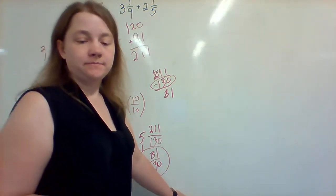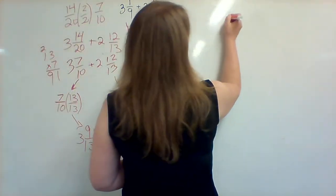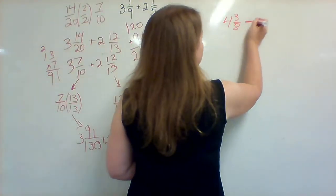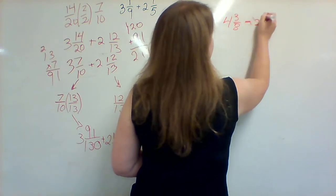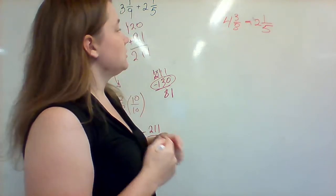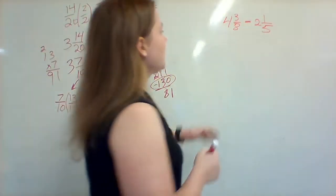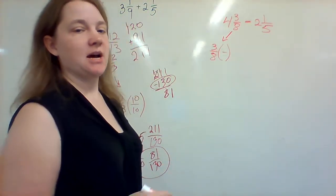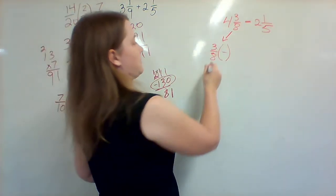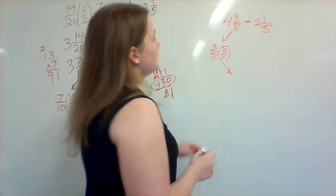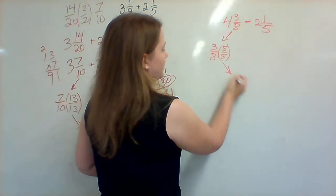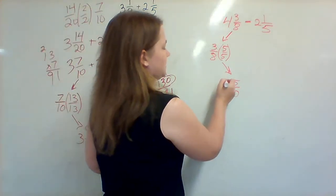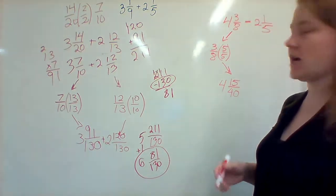We're going to take a look at one more, and this one is 4 and 3 eighths minus 2 and 1 fifth. So what I'm going to do is neaten this up so it doesn't look so sloppy. I'm going to take out my 3 eighths and multiply it by the denominator on the other fraction, so I'm going to multiply it by 5 over 5. So 3 over 8, 3 times 5 is 15, 8 times 5 is 40. So 3 over 8 becomes 15 over 40. I'm also going to move this 4 down right now just to make absolutely sure that it's there.